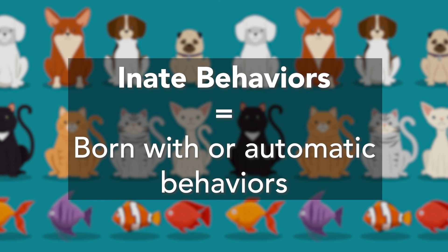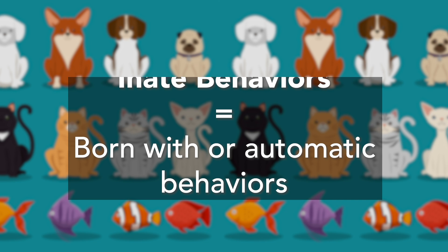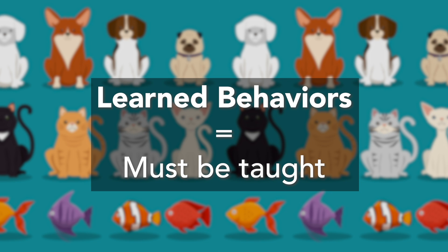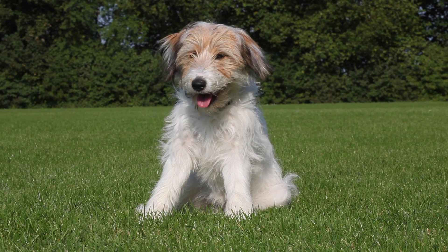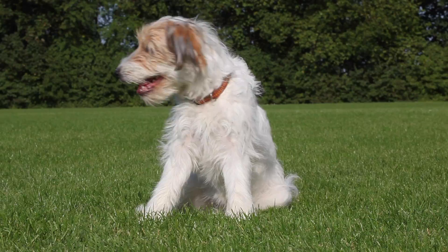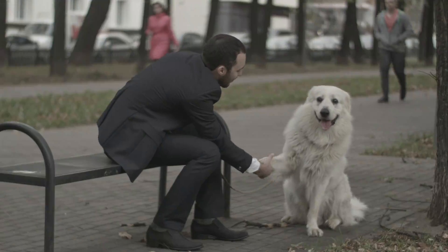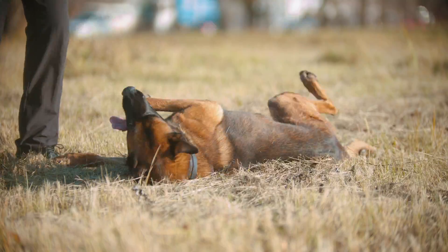Innate means you were born with a certain behavior. These behaviors are automatic — they happen without you thinking about it. Learned behaviors are behaviors that must be taught to animals and humans. Here are a few examples of learned behavior: a dog is taught to sit up, shake, and roll over.